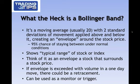What is a Bollinger Band anyway? A Bollinger Band is a moving average — generally a 20-period, or if you're using a daily chart, a 20-day moving average — surrounded by two lines above and below it.